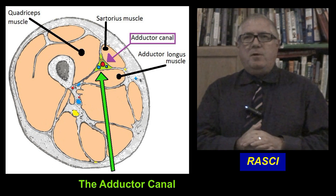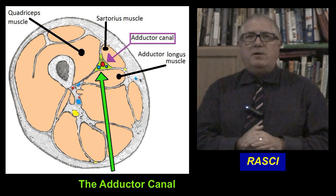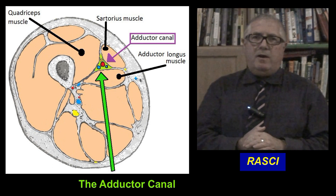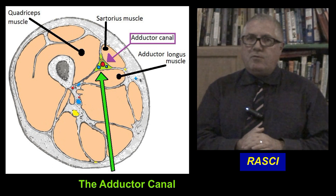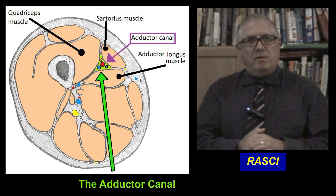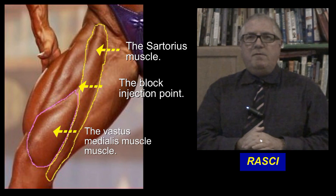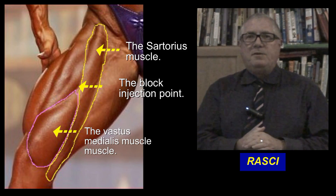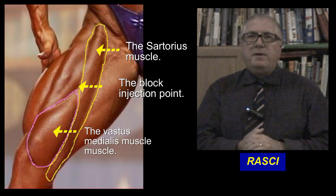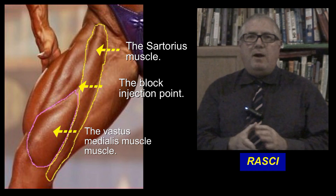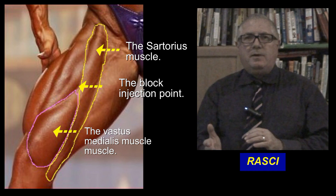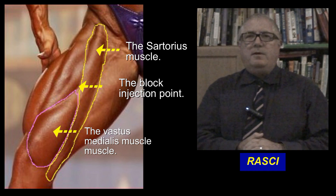The saphenous nerve is purely sensory and serves the lower leg. The saphenous nerve lies lateral to the artery. The nerve to vastus medialis muscle, after supplying that muscle, continues into the knee joint, where it supplies part of the medial joint capsule.